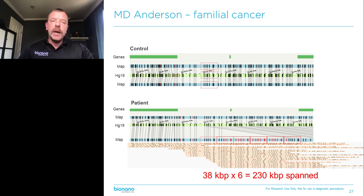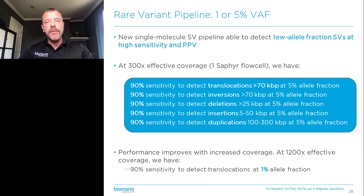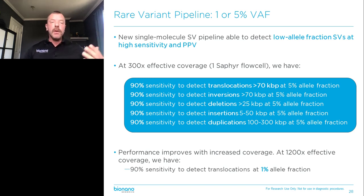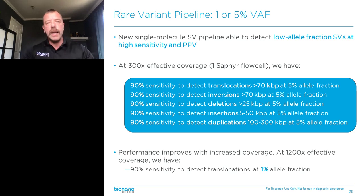For cancer specifically, where samples can be very heterogeneous and you can have subclonal populations of cells, we developed another pipeline called the rare variant pipeline. It allows you to detect very low allele fraction structural variants with very high sensitivity and very high PPV — so low false positives. At 300x effective coverage, so just a single flow cell run for a day on our instrument, we can detect translocations, inversions, deletions, and insertions down to 5% allele fraction.